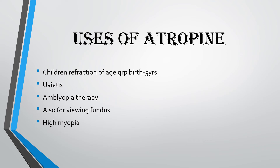One of the main uses of Atropine is in amblyopia therapy. It is used for children of age group 3 to 12 years having moderate amblyopia. In some studies, it has even been proven to give better results than occlusion therapy. This topic deserves a single independent video, so if you want to know about the use of Atropine in amblyopia therapy in detail, do tell us in the comments.